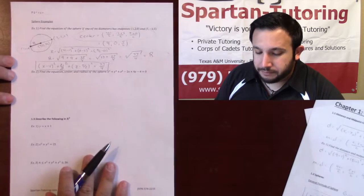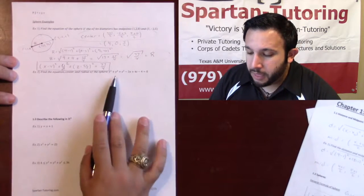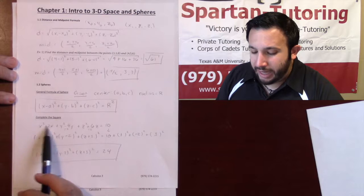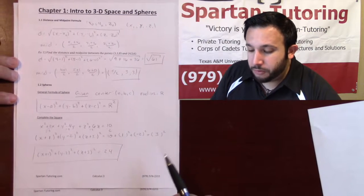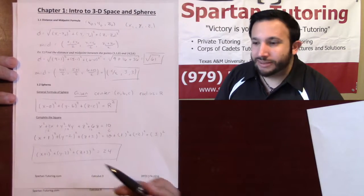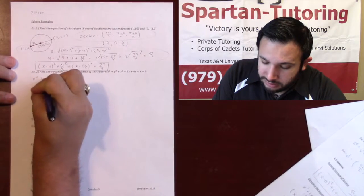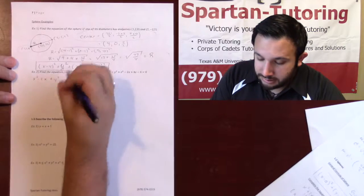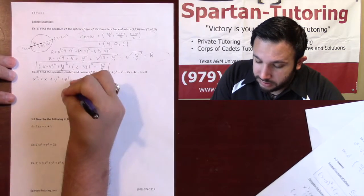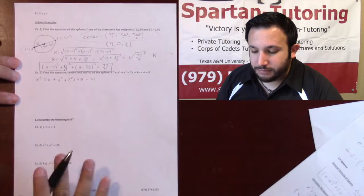Another type of problem requires completing the square to find the equation, center, and radius of a sphere. The equation isn't in the standard form yet — I need the x terms together, the y terms together, the z terms together, and the constant on the right side. So I'll rearrange: x squared minus 2x, plus y squared, plus z squared plus 4z equals 4.